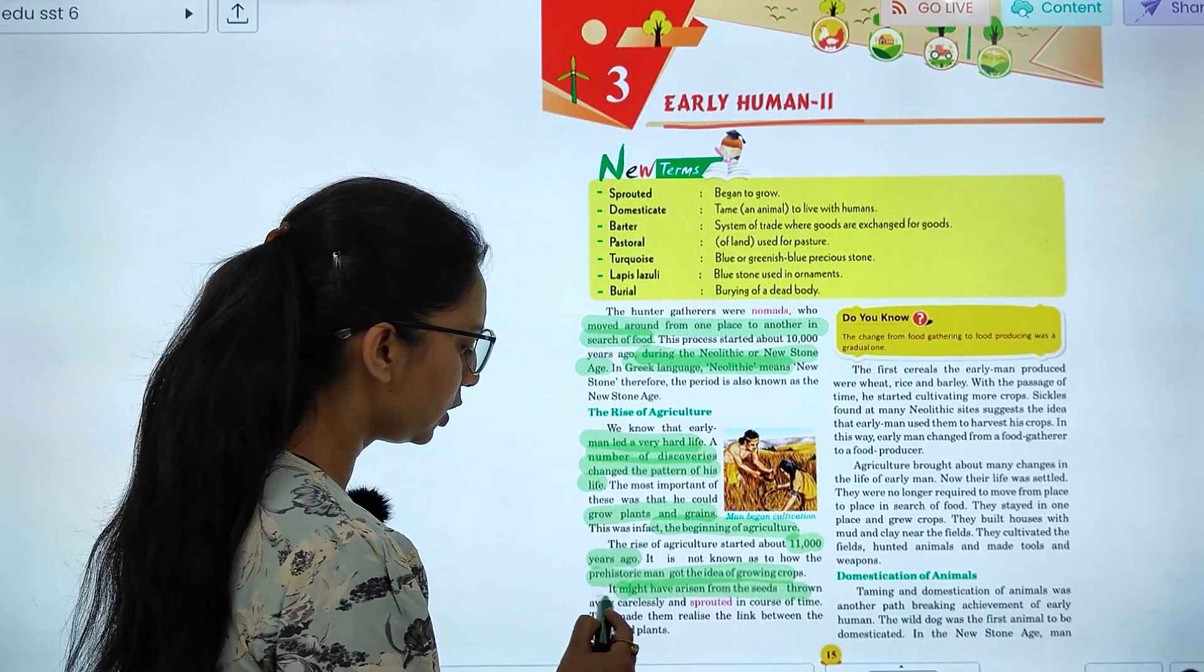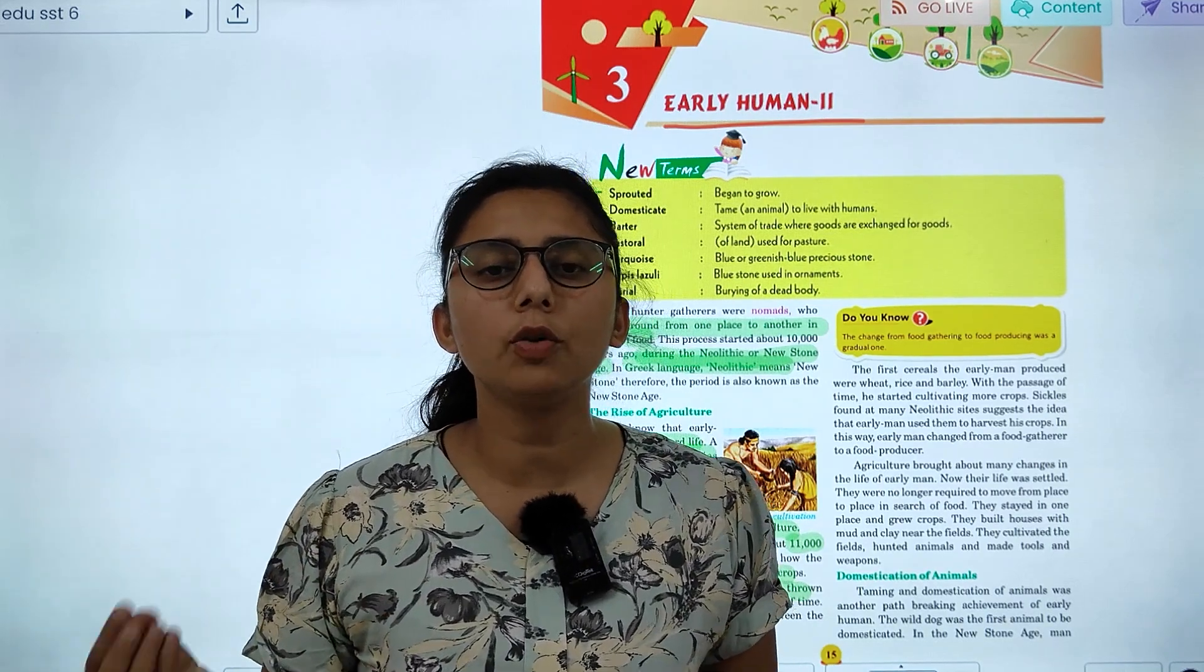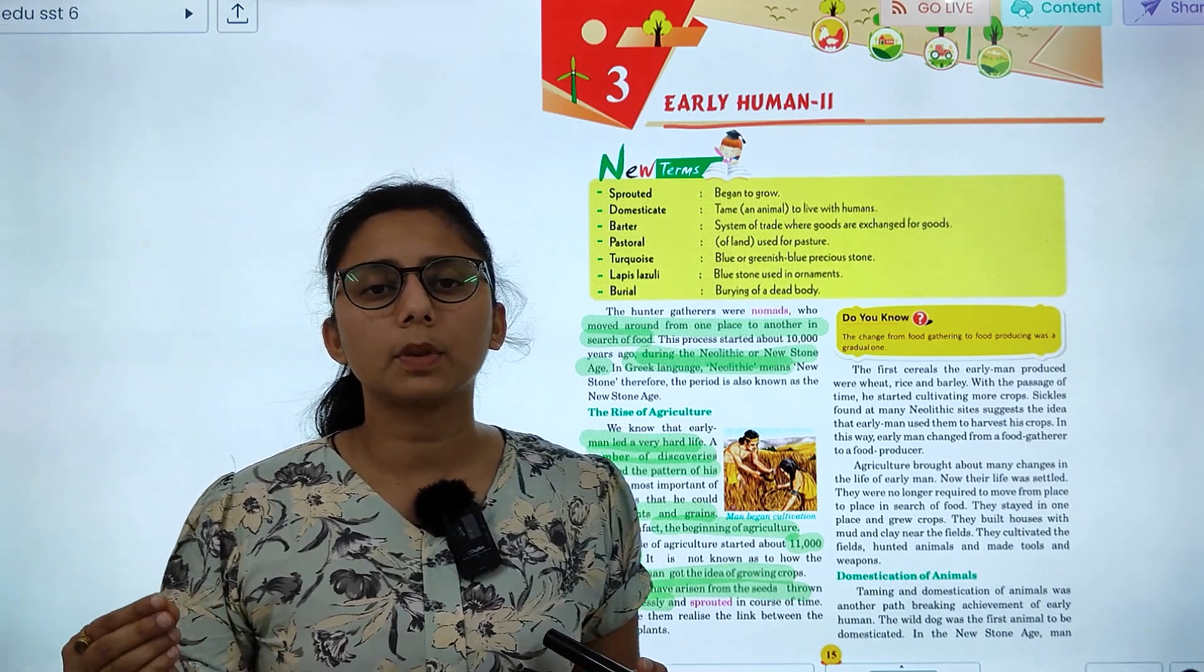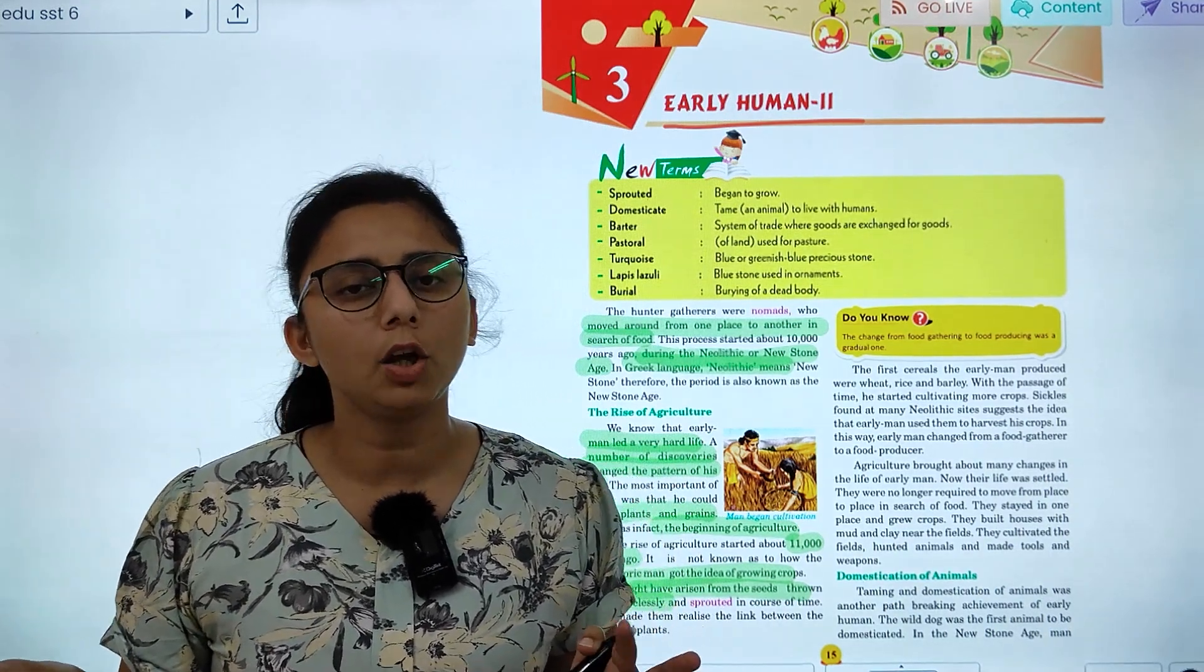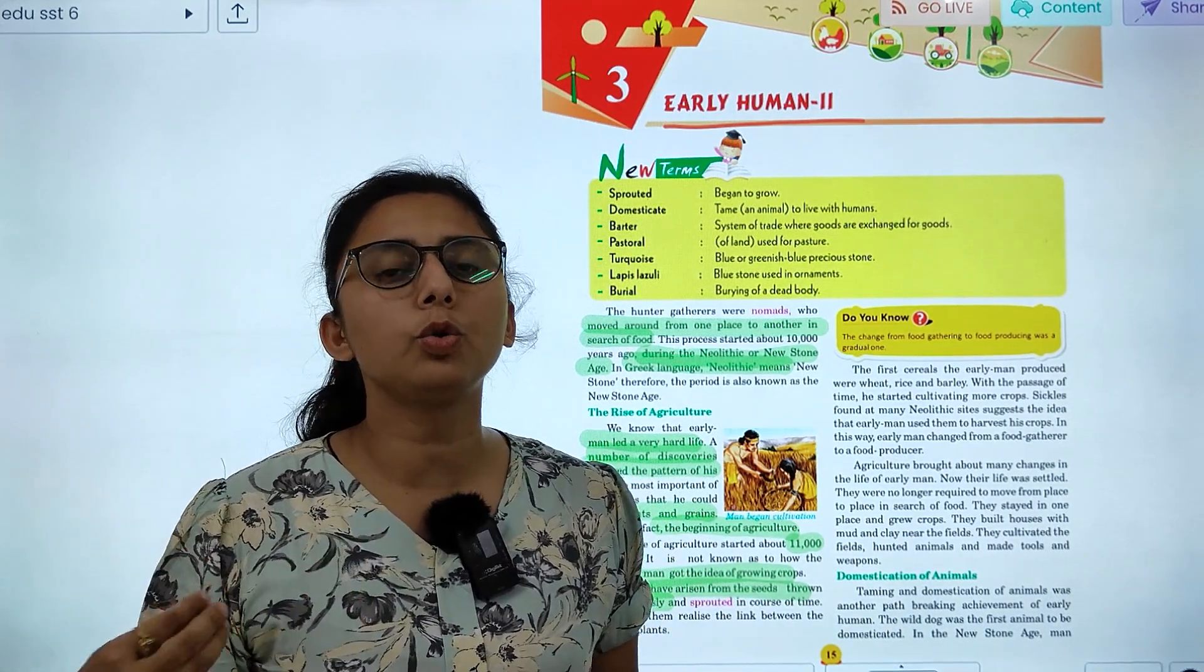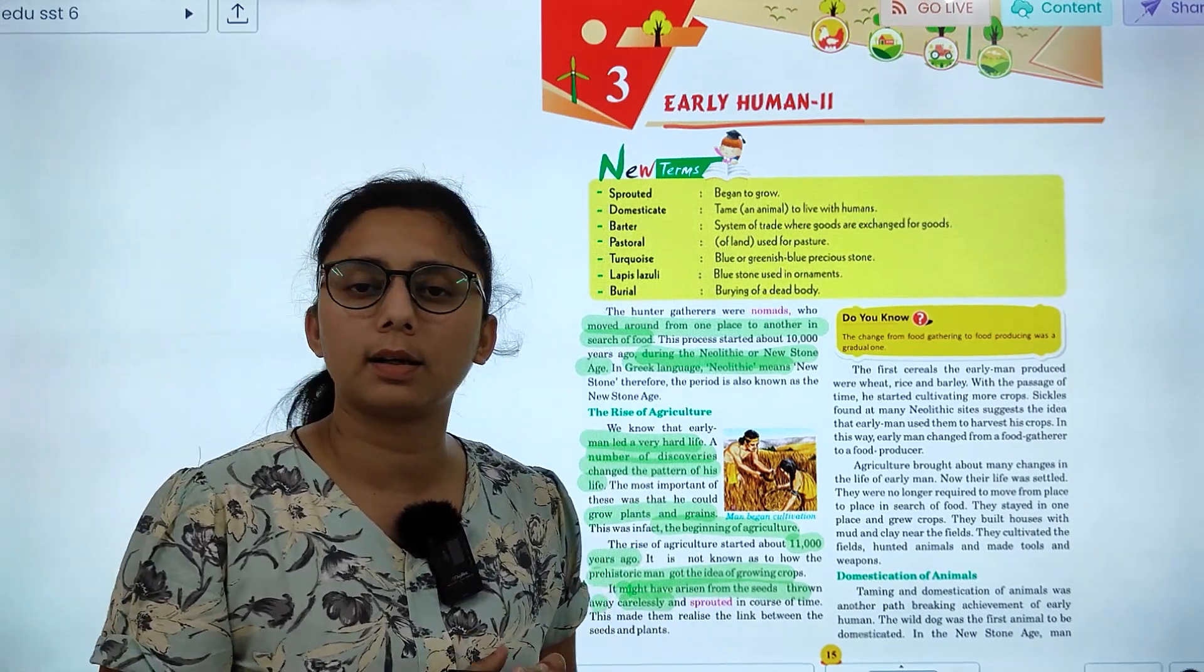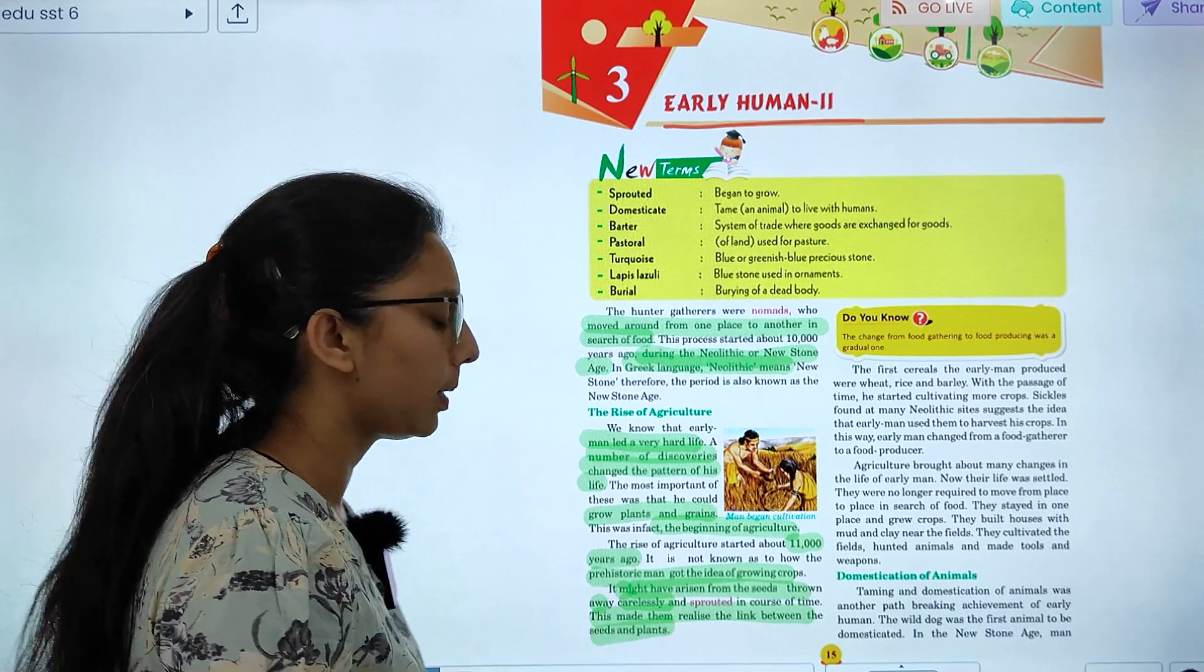It might have arisen from seeds carelessly scattered. Because animals used to graze and when they released their waste, seeds would grow. So early man's idea came. They knew what was happening with seeds, what was happening with plants growing. So they started planting crops. This made them realize the link between seeds and plants.